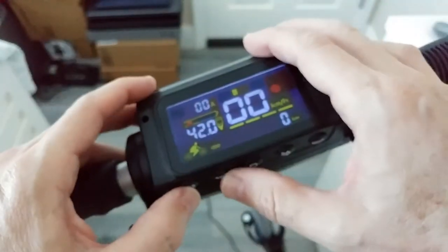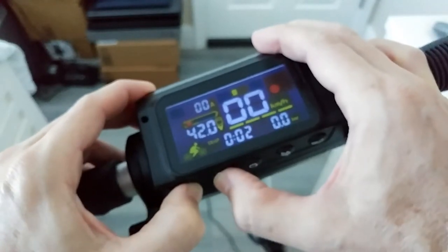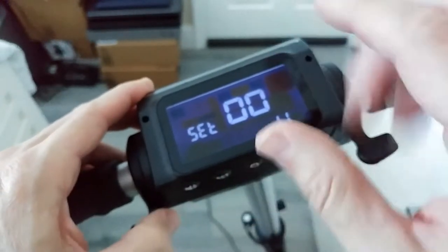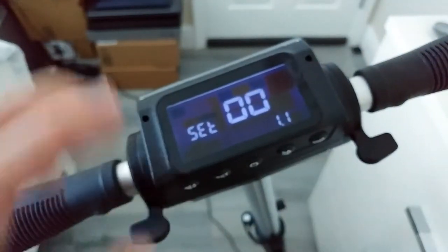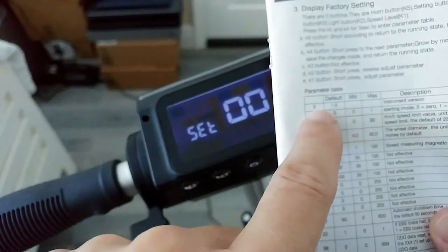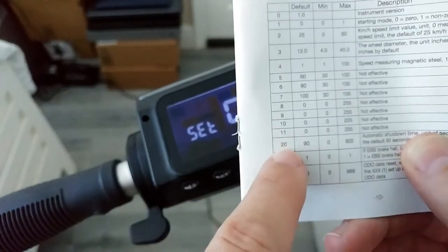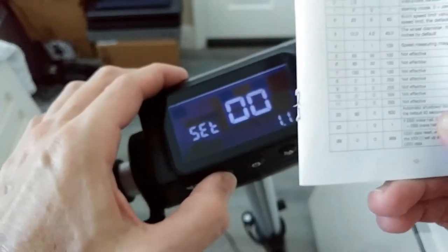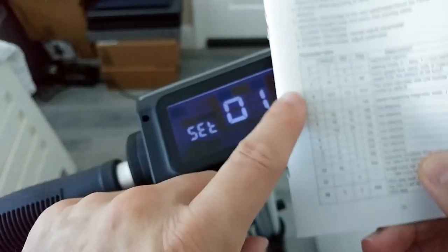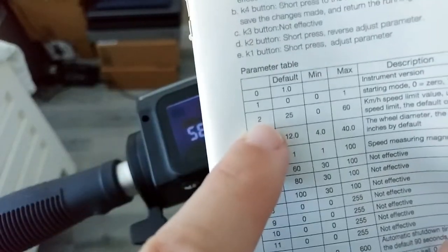So here we are on the normal display. We have to push these two buttons here on the left side for a little bit, and then it goes into the setting mode. Then we are on number zero - that's the thing here which is equivalent to this number. Then we can go down, and every time we push this button it will go to the next section. We are on number one, we push again, then we are on number two where we can set the maximum speed.